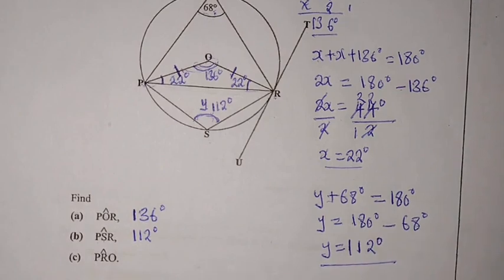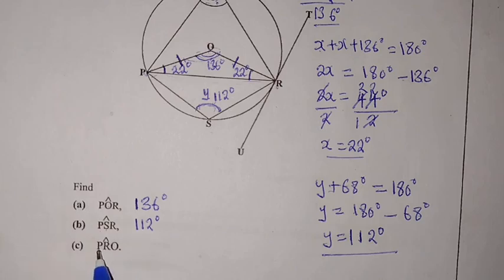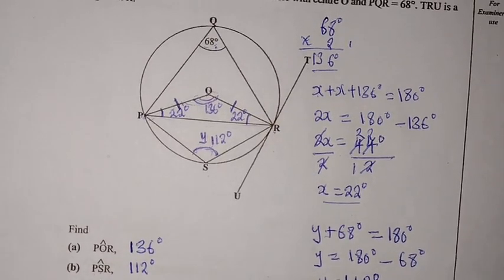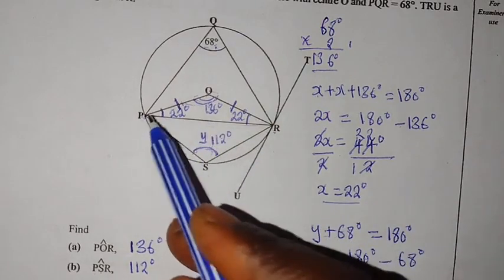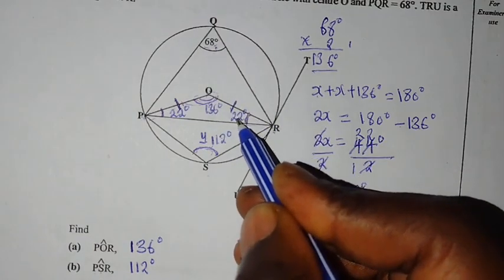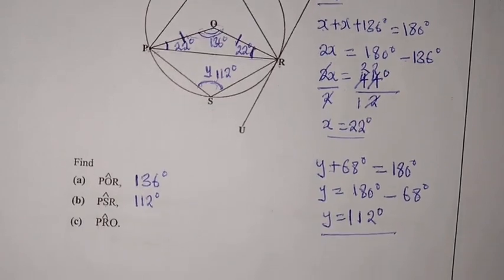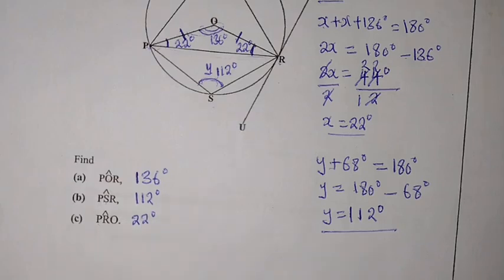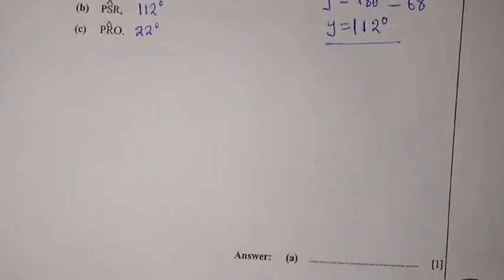Then lastly, we come to this one, which is PRO. So PRO. The angle at R. PRO. The angle which is right here. We found that it's 22 degrees. So here we are just going to write 22 degrees. So we just write our answers here.